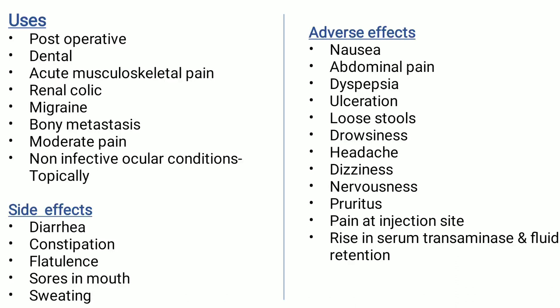Uses of ketorolac: post-operative pain, dental pain (its main use), acute musculoskeletal pain, renal colic, migraine, bony metastasis, moderate pain, and non-infective ocular conditions (topically). Side effects: diarrhea, constipation, flatulence (gas accumulation in the esophagus), sores in the mouth, and sweating. Adverse effects: nausea, abdominal pain, dyspepsia, ulceration, loose stools, drowsiness, headache, dizziness, nervousness, pruritus, pain at injection site, rise in serum transaminases, and fluid retention.